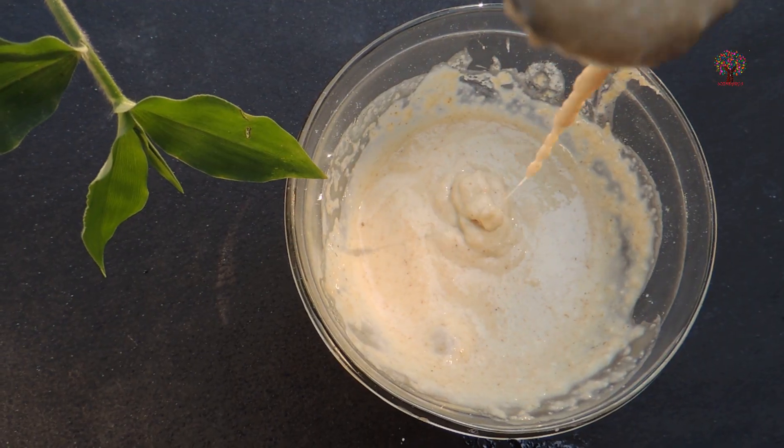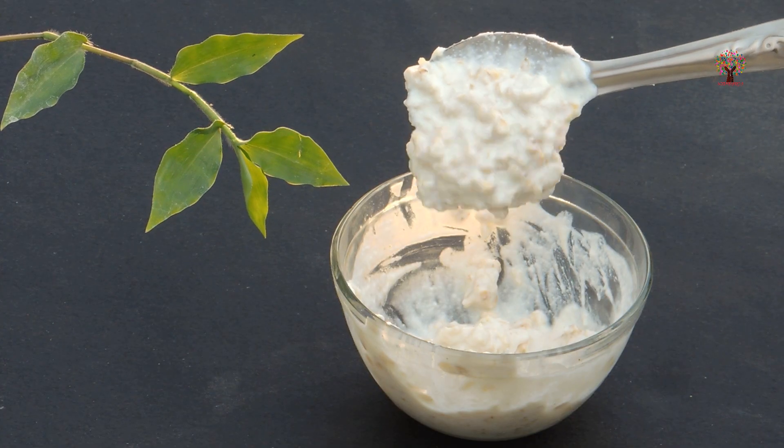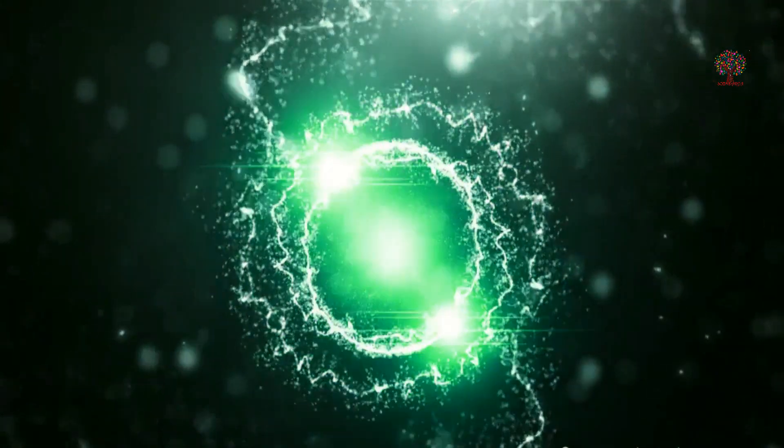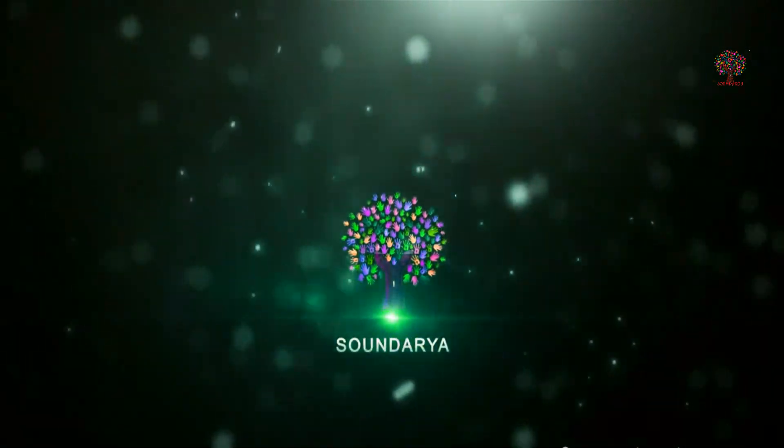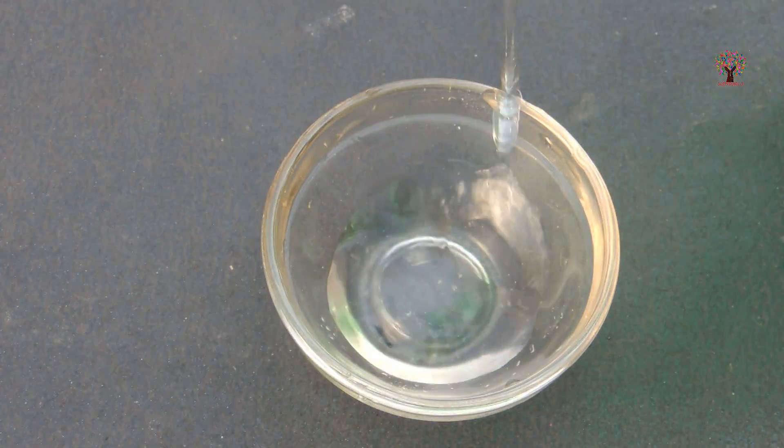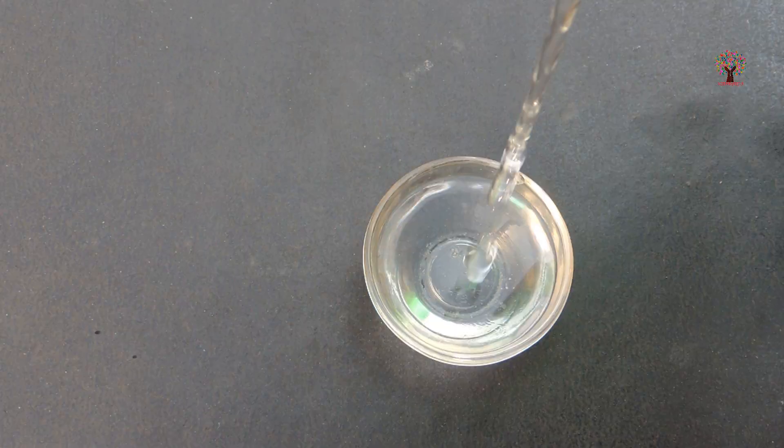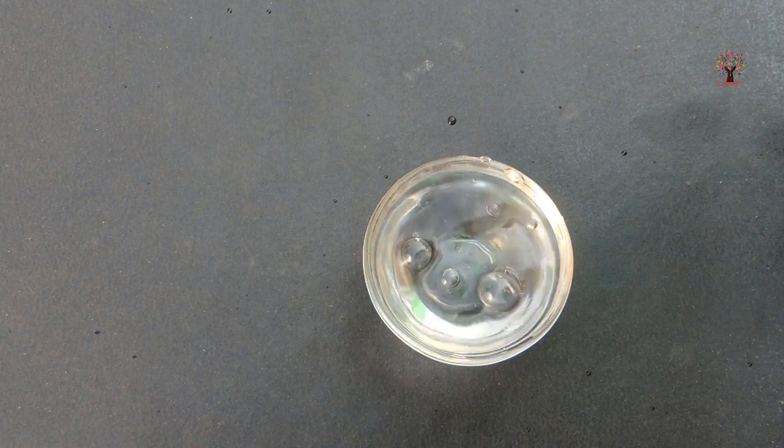Today we will show you how to make oatmeal face pack for skin tightening at home. Here we will first take two small bowls of water. We could usually use any other ingredient but here we will heat the ordinary water a little.